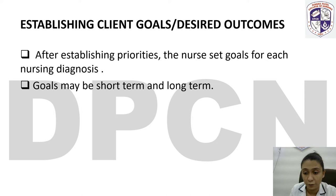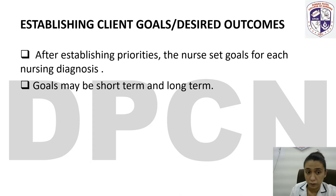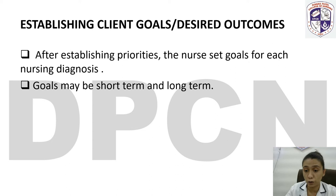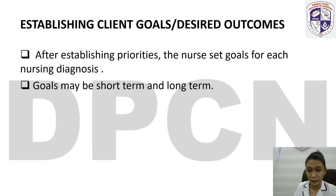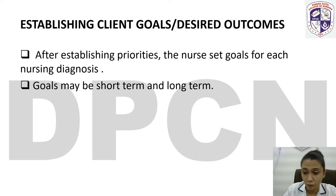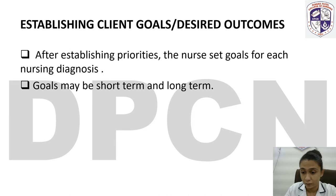Establishing client's goal and desired outcome: after setting priorities, the nurse sets goals for each nursing diagnosis. For example, if my patient has pneumonia, my short-term goals are to reduce breathing difficulty, reduce coughing, reduce sneezing, and reduce cold. My long-term goal is to reduce or eliminate pneumonia disease.